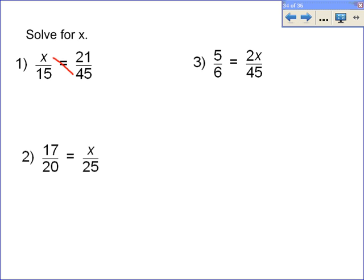So x times 45 is just 45x. That's one cross product. The other cross product is 15 times 21. When we do 15 times 21, we get that equals 315.